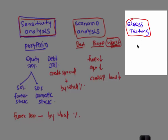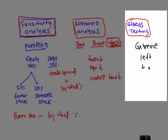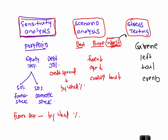In stress testing, which is in a way a type of scenario analysis, your focus is largely on extreme left tail events. Stress testing is essentially a worst case scenario analysis where you try to see what if there is a drastic change — for example, overnight interest rates increase by 4%, or what if we have a scenario similar to the Russian debt default happening again. What will happen to the value of the portfolio or the capital of a bank? That is what we call stress testing.